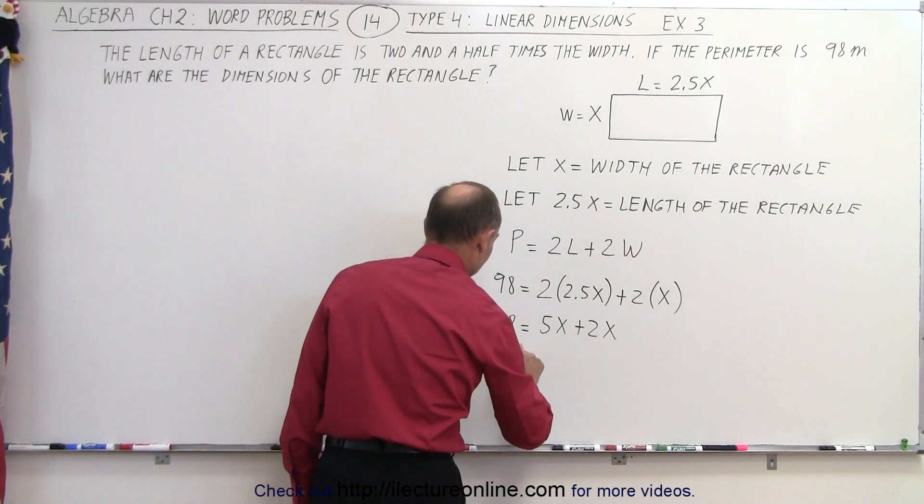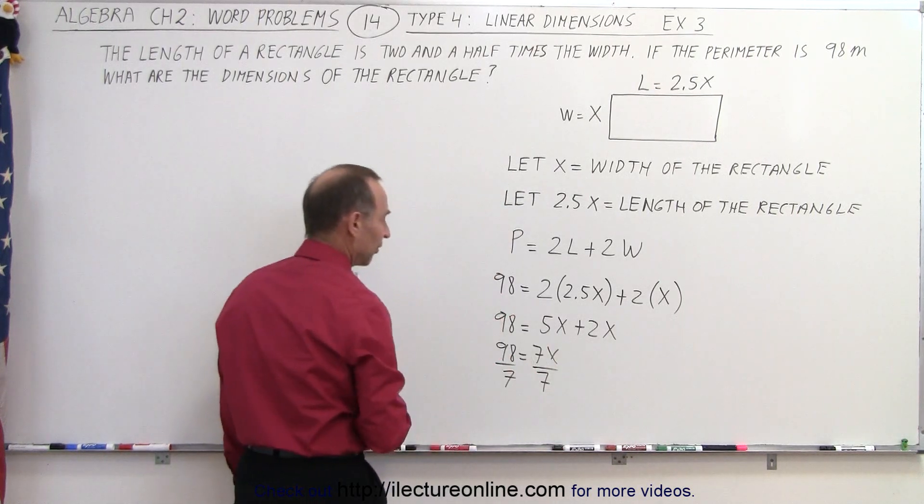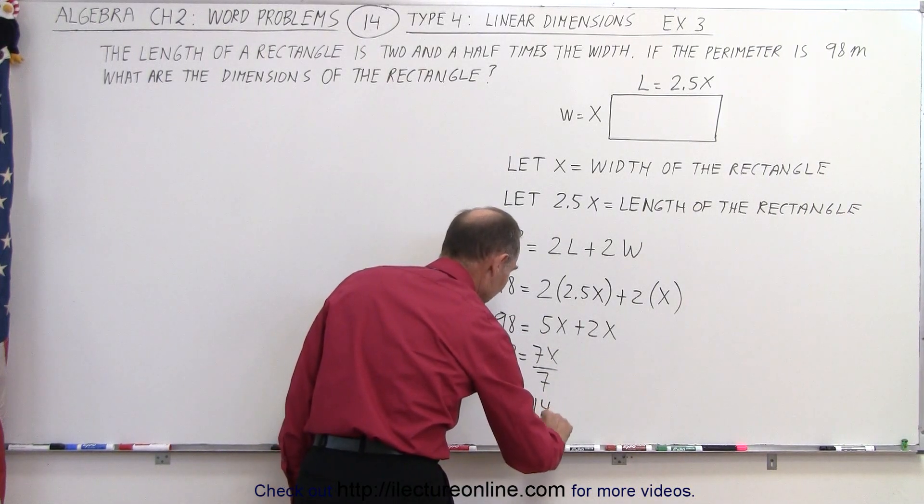Combining like terms, 98 is equal to 7x, and divide both sides of the equation by the numerical coefficient of x, we can write that x is equal to, that would be 14. 14 times 7 is indeed 98.